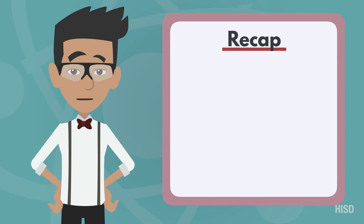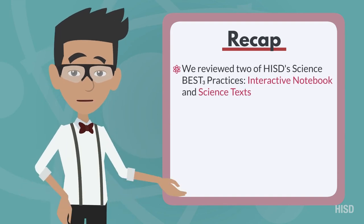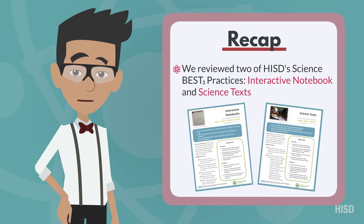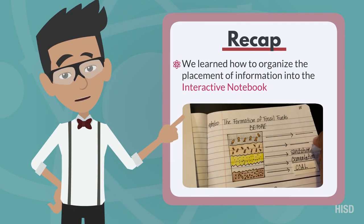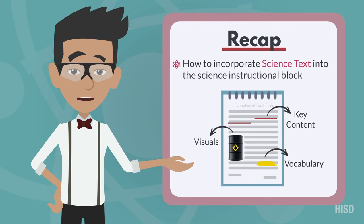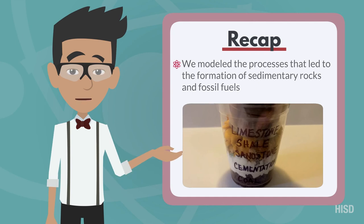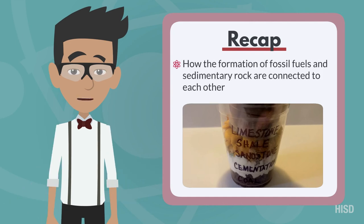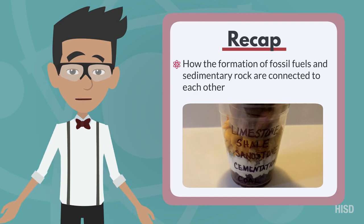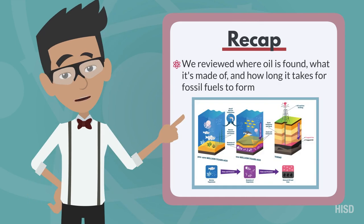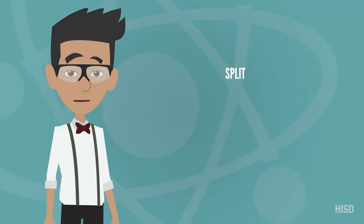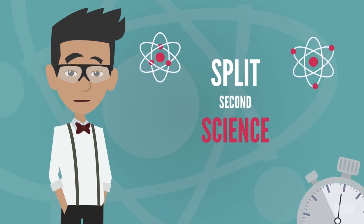Let's recap what we just learned. We reviewed two of HISD's science best practices — interactive notebook and science text. We learned how to organize the placement of information into the interactive notebook and how to incorporate science text into the science instructional block. We modeled the processes that led to the formation of sedimentary rocks and fossil fuels, and how the formation of fossil fuels and sedimentary rock are connected to each other. We reviewed where oil is found, what it's made of, and how long it takes for fossil fuels to form. Thanks for watching! Be sure to check out the other segments of Split-Second Science!